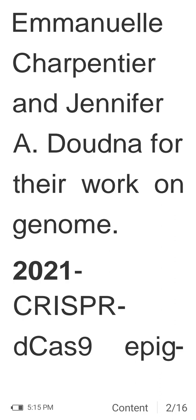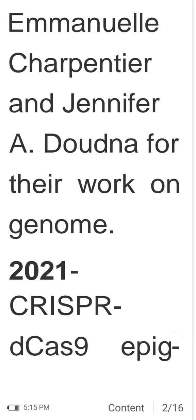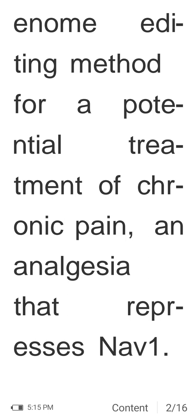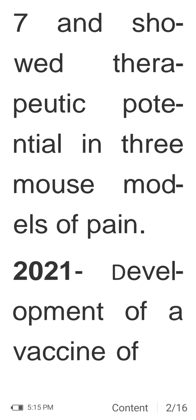In 2020, the Nobel Prize in Chemistry was awarded to Emmanuelle Charpentier and Jennifer A. Doudna for their work on genome editing. In 2021, CRISPR-dCas9 and epigenome editing methods showed therapeutic potential for treatment of chronic pain and analgesia, repressing Nav1.7 in three mouse models of pain.